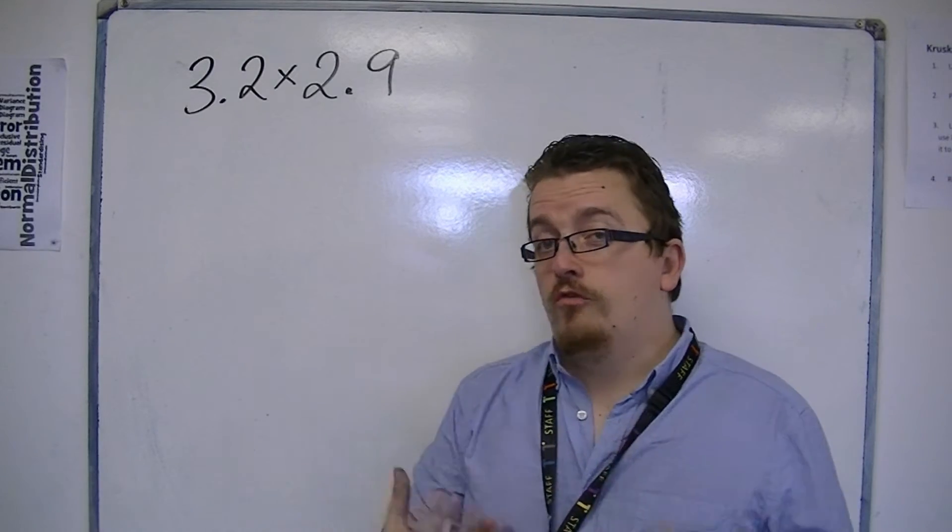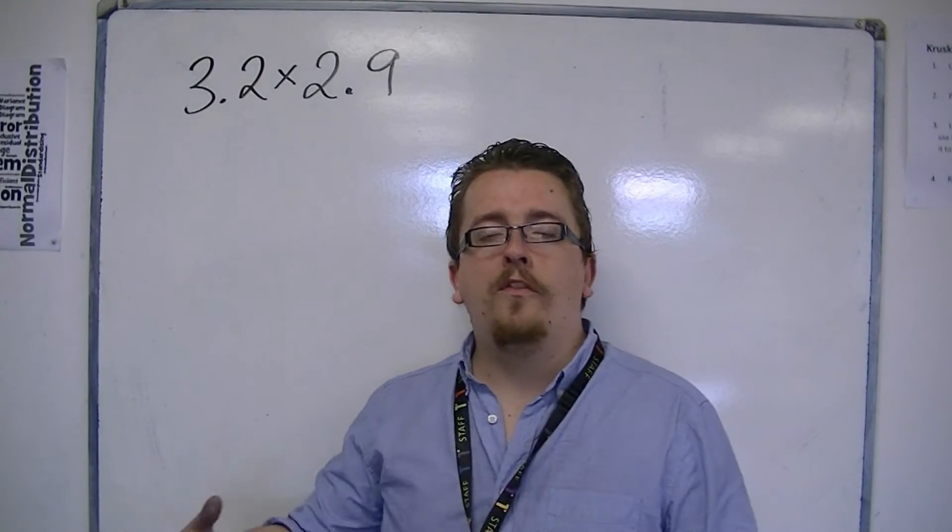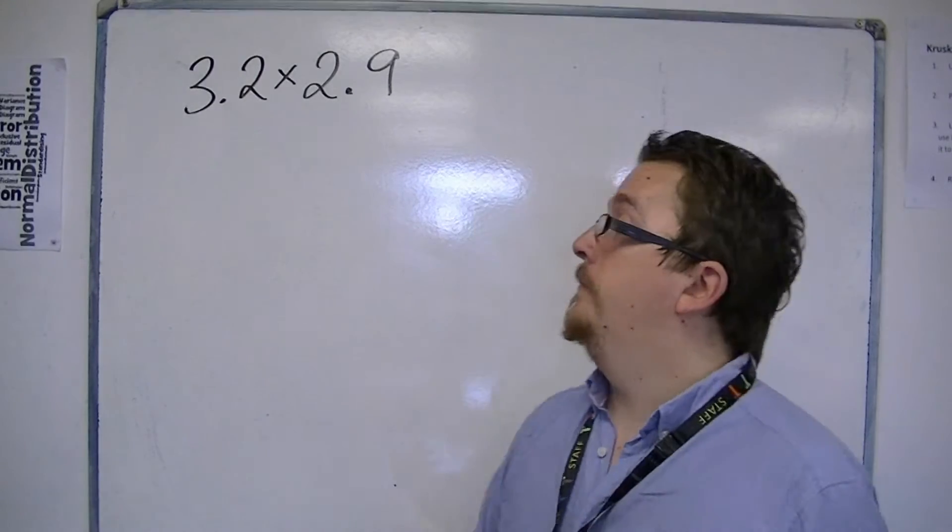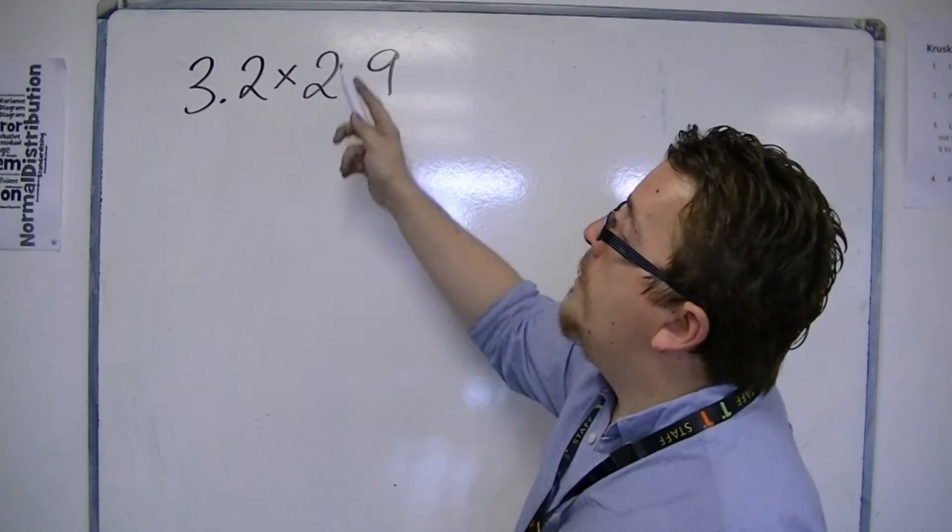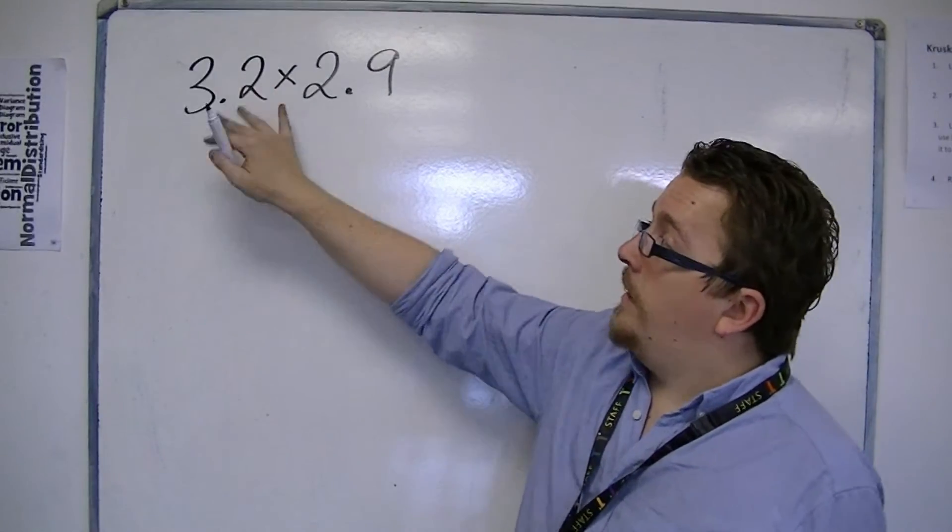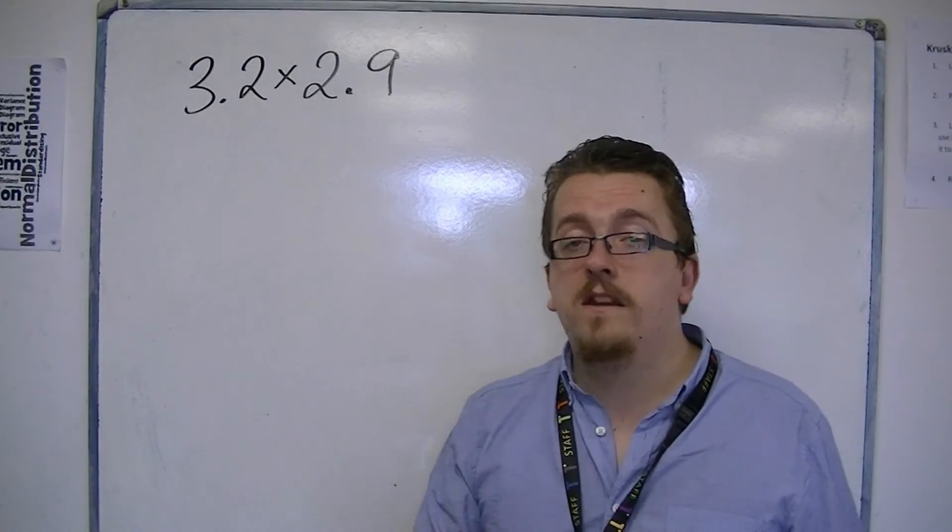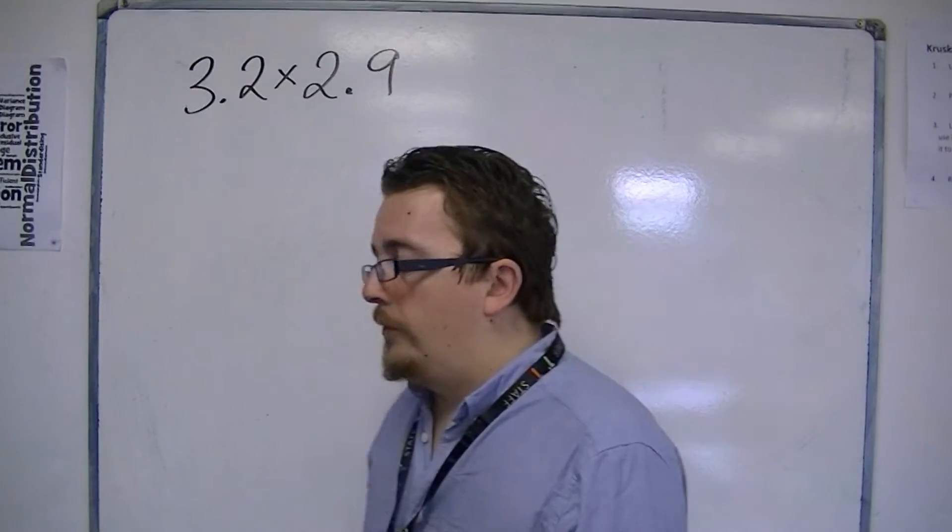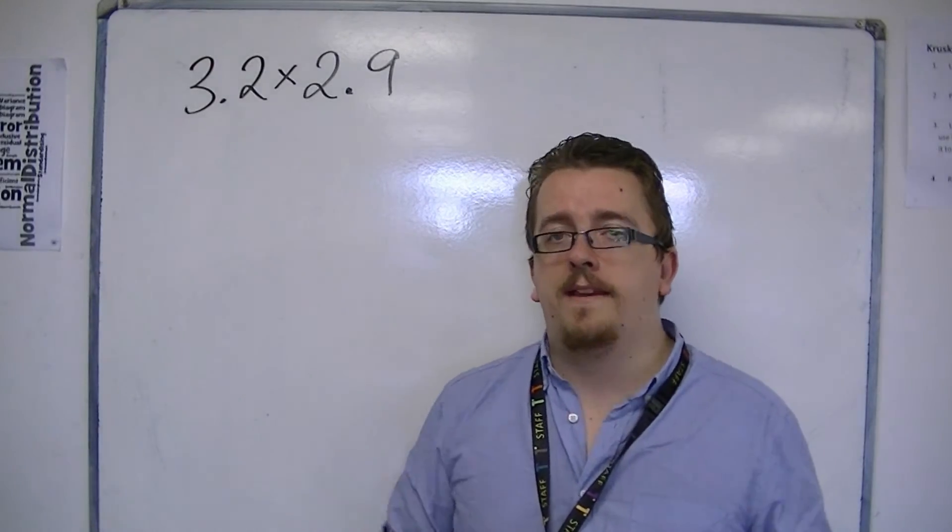One thing you should really get into the habit of doing is can you determine what the answer should be close to? So 3.2 is close to 3, 2.9 is close to 3, so it should be close to 3 times 3. So our answer should be something near 9. That should give you a hint as to where the decimal point should go right at the end.